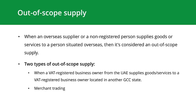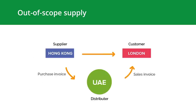The other type is merchant trading, which describes any transaction where goods are imported from an overseas supplier and sold to an overseas buyer. The goods are not brought into the UAE at all. For example, businesses A and B: A is in Hong Kong and B is in London, both specializing in food products. A sells food products to B, which are shipped directly from A's factory in Hong Kong to B's branch in London and do not pass through the UAE, though the distributor is located in the UAE. So the sale of these food products is considered an out-of-scope supply.